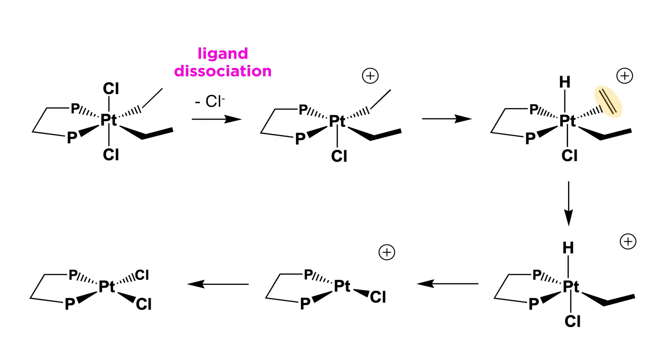Next, this ethyl substituent has become an ethene substituent, coordinating from the pi bond, and we have a new hydride in this axial position. This looks like the opposite of a migratory insertion, so this was a beta-hydride elimination.